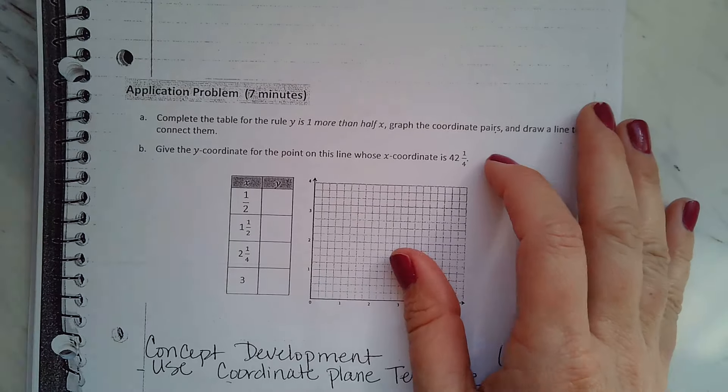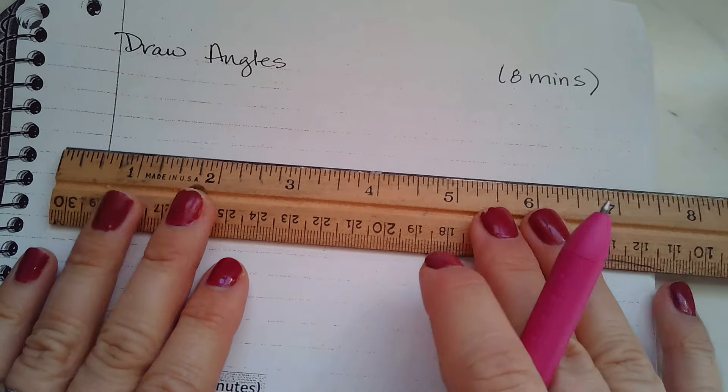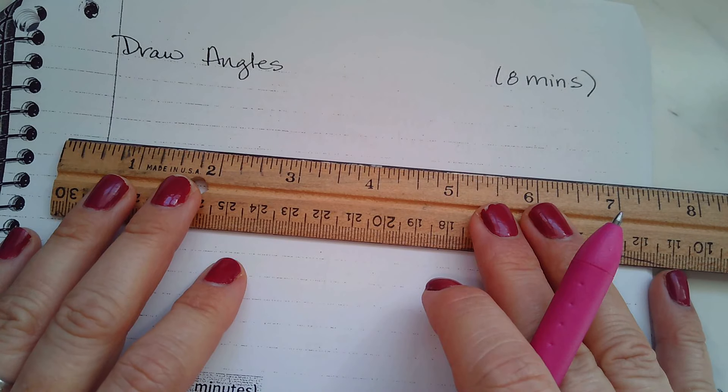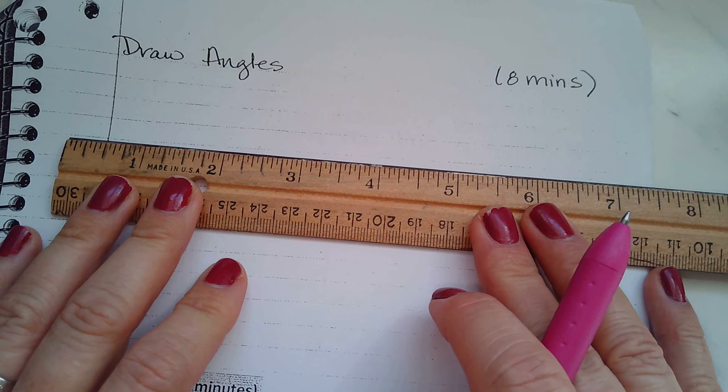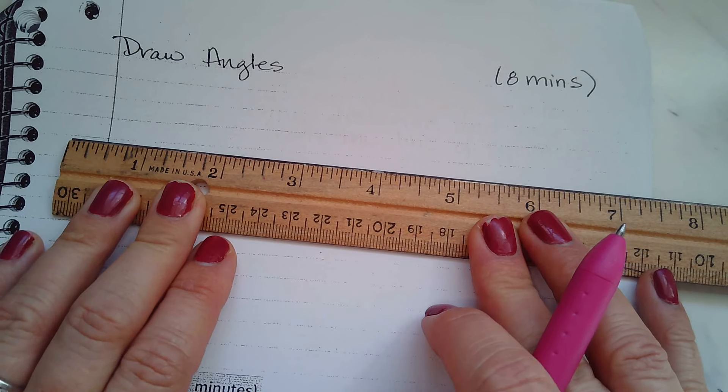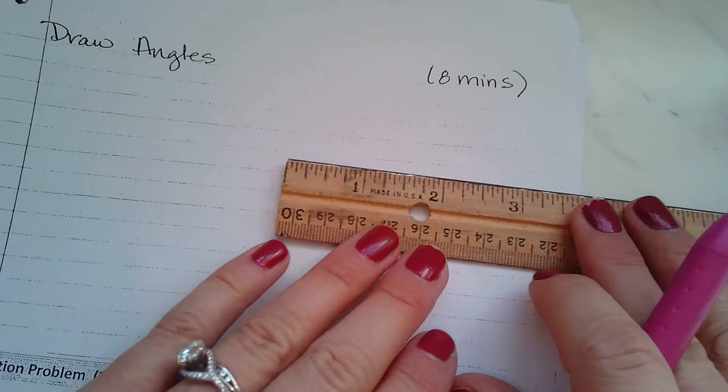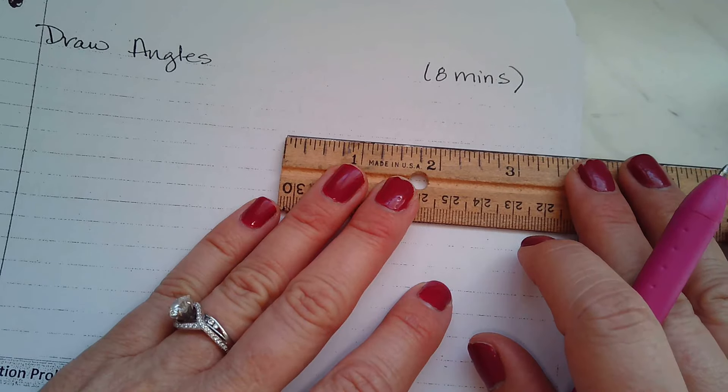Moving to the next part of our fluency, we are going to draw some angles. So if you have your ruler, go ahead and get that out. So we're going to draw three lines today. So what you're going to do is we're going to start over here today. Start to the right.